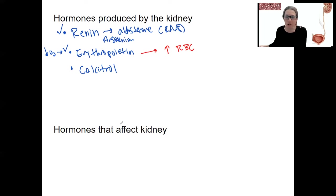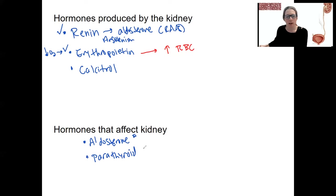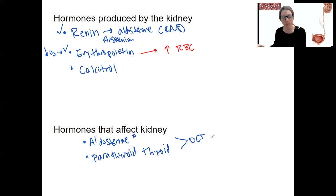Then we have hormones that act on the kidney. Aldosterone — renin stimulates aldosterone, which is going to stimulate potassium secretion and sodium reabsorption in the distal convoluted tubule. We saw that last week with blood pressure regulation, and we're going to look at it a bit more this week. Then we've got parathyroid hormone — also acting at the distal convoluted tubule in terms of calcium reabsorption. When calcium levels are low, it acts on the kidney to help us reabsorb calcium.